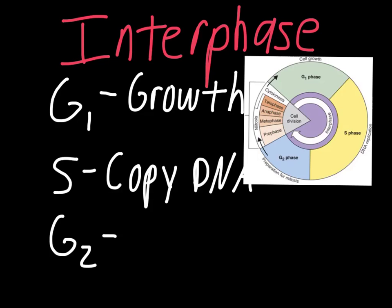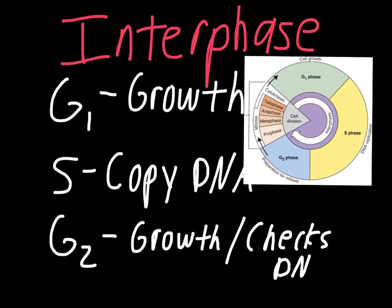There is something important, though, that I want you to know about this step. G2 is another period of growth, which is big. The other thing that happens is that the cell checks the DNA. This is very important because the cell can make mistakes, and we'll get into this a little bit more when we actually study DNA later on on its own.